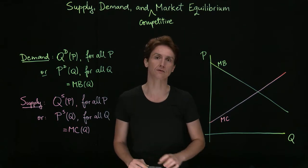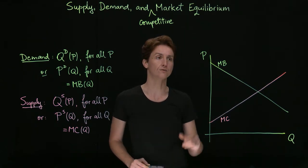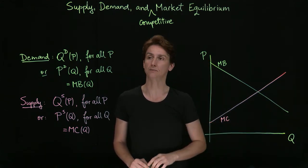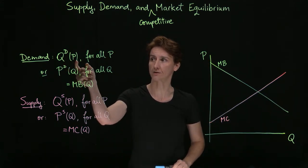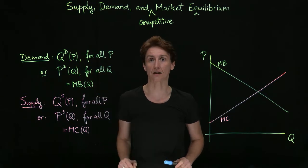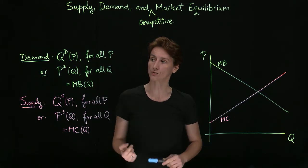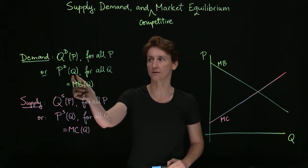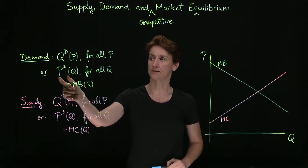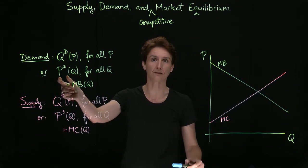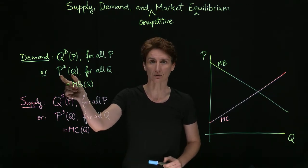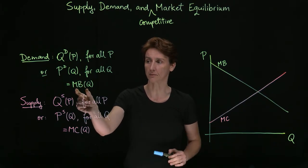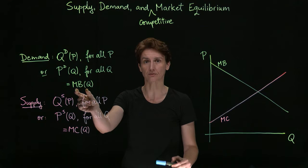So first, we can think of demand as telling us, for all the different values of price, what the quantity demanded is — quantity as a function of price for any price value. But we could also look at it from the other point of view: at any given quantity, what is the price that consumers are willing to pay for the next unit? And that price they're willing to pay, if it is a competitive market, is going to equal the marginal benefit they expect to get from that unit.